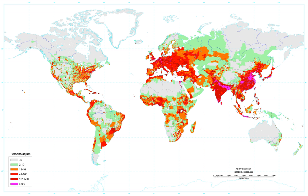Population density in agriculture, standing stock and standing crop is a measurement of population per unit area or unit volume. It is a quantity of type number density. It is frequently applied to living organisms, and most of the time to humans. It is a key geographical term. In simple terms, population density refers to the number of people living in an area per kilometer square.